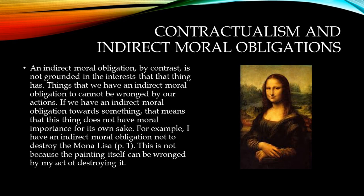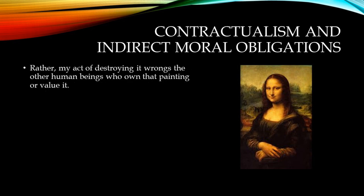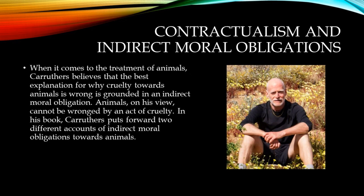An indirect moral obligation, by contrast, is not grounded in the interests that that thing has. Things that we have an indirect moral obligation to cannot be wronged by our actions — they do not have moral importance for their own sake. For example, I have an indirect moral obligation not to destroy the Mona Lisa. This is not because the painting itself can be wronged by my act of destroying it. Rather, my act of destroying it wrongs other human beings who own that painting or value it. When it comes to the treatment of animals, Carruthers believes that the best explanation for why cruelty towards animals is wrong is grounded in an indirect moral obligation. Animals, on his view, cannot be wronged by an act of cruelty.